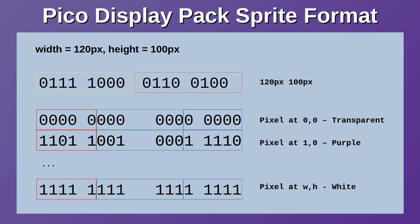I also needed to include some way of holding transparency information. I used black — represented by red, green and blue all having a value of 0. Any pixel that needs to be black rather than transparent has the least significant bit of the blue colour set to 1. This is a very slight blue tint to the colour, but it's not noticeable when shown on the Pico display screen.